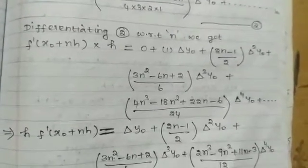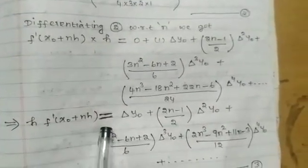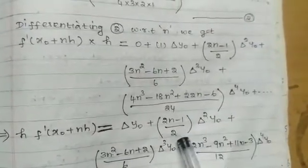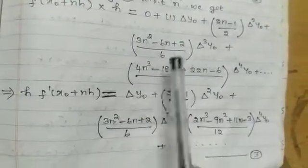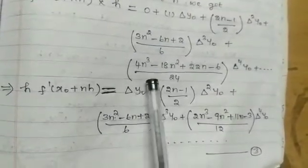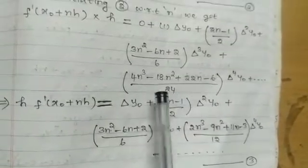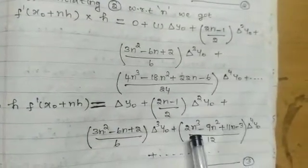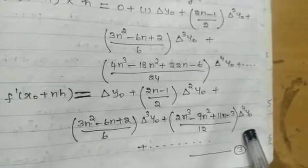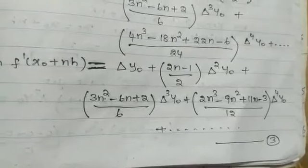Simplifying, h·f′(x₀ + nh) = Δy₀ + (2n−1)/2 · Δ²y₀ + (3n²−6n+2)/6 · Δ³y₀ + (2n³−9n²+11n−3)/12 · Δ⁴y₀. We mark this as equation number 3.